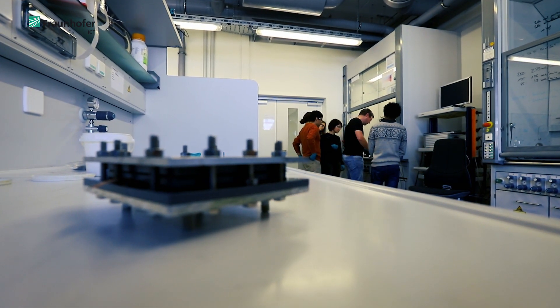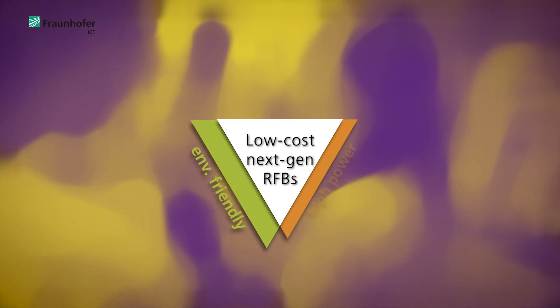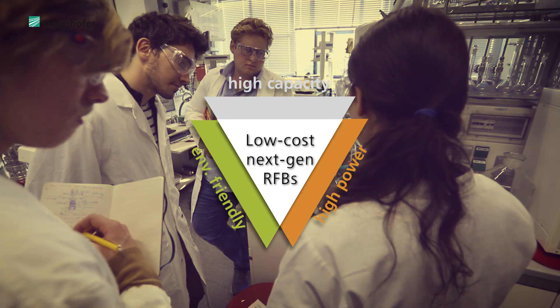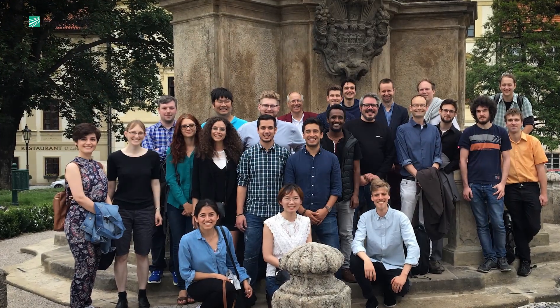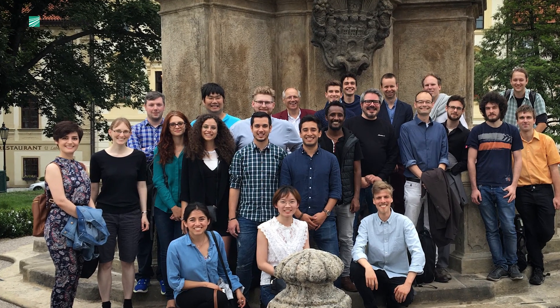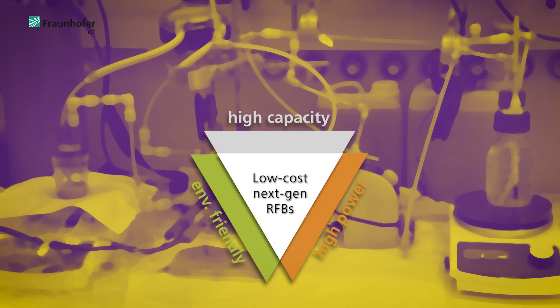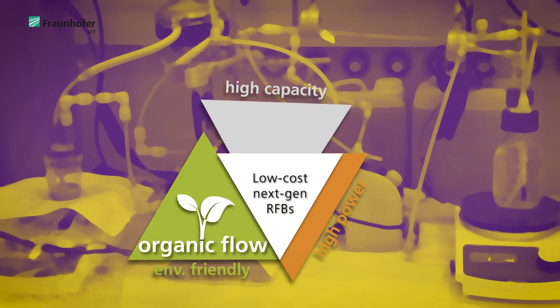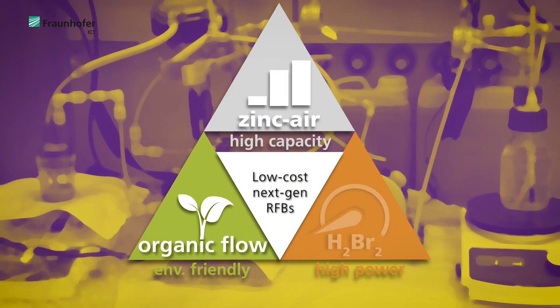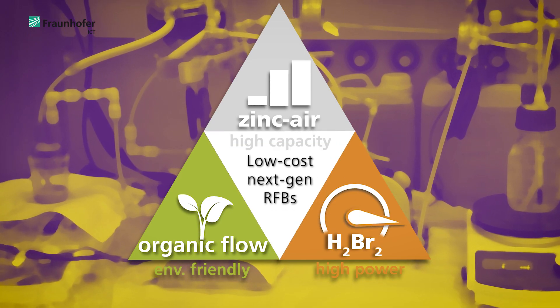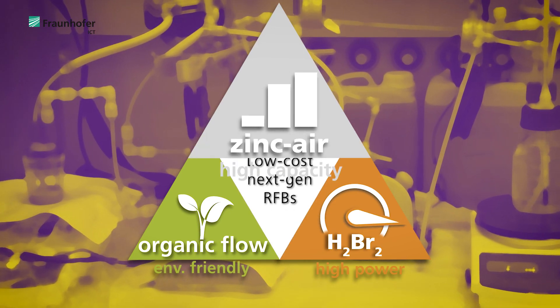FlowCamp is a European training network for researchers in the field of next-generation redox flow batteries. It consists of the work of 15 PhD students on three different redox flow battery systems: organic flow batteries, zinc air, and hydrogen bromine.